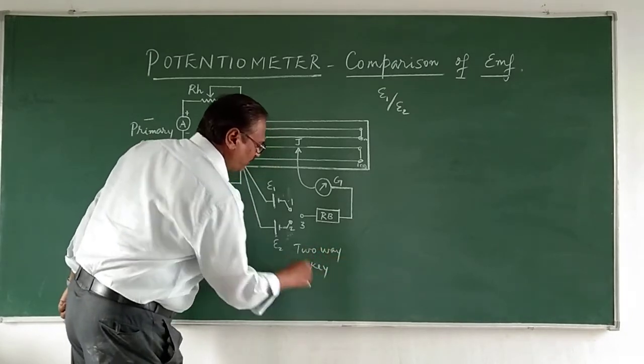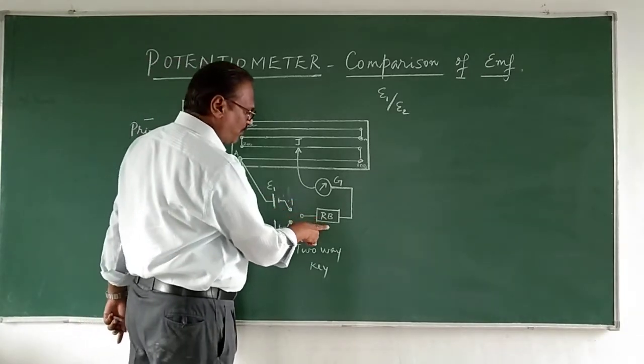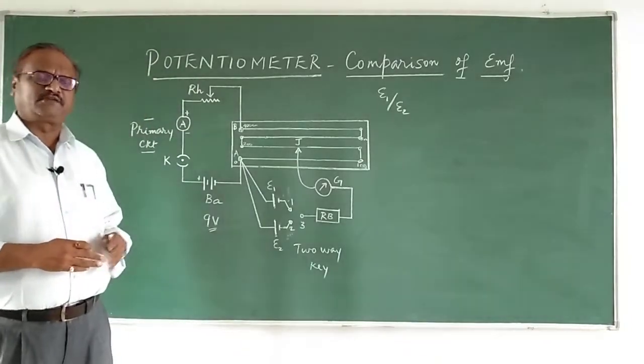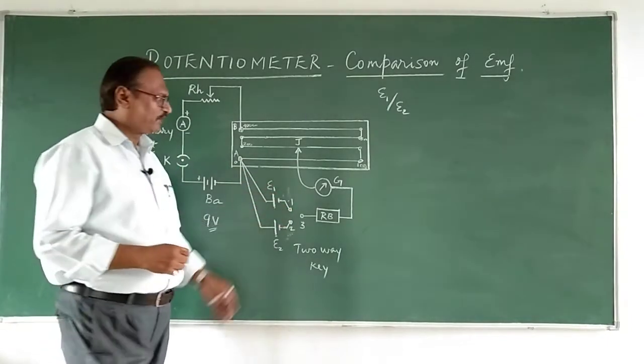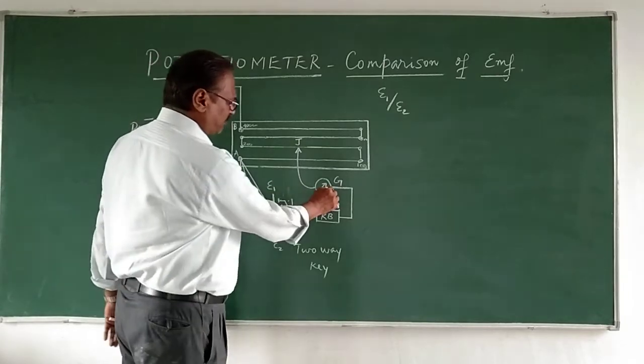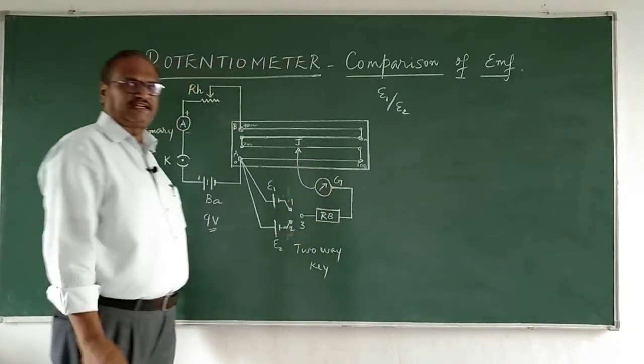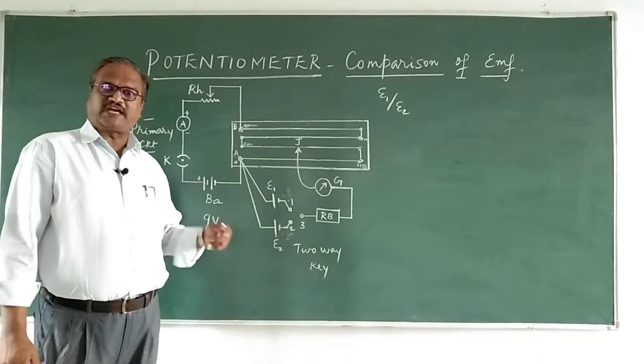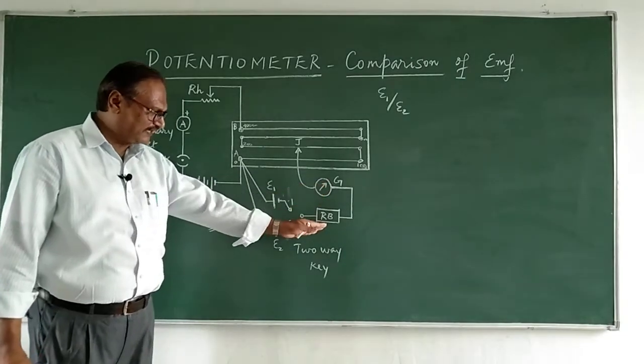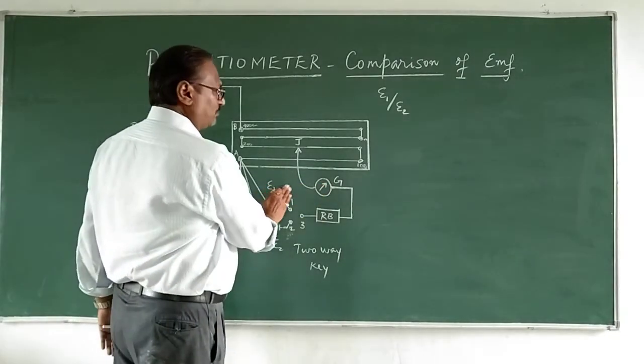From that third point, the middle point, it goes to a resistance box and to a galvanometer and to the jockey, similar to meter bridge. The jockey is the contact on the wire and the galvanometer. We connect the resistance box so that the galvanometer coil will not get damaged due to excess current, as a safeguard.